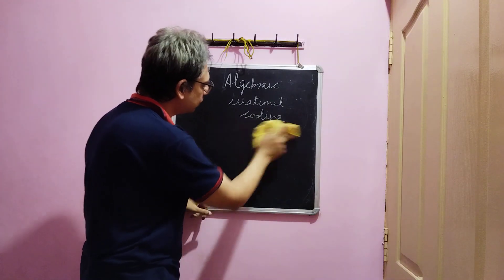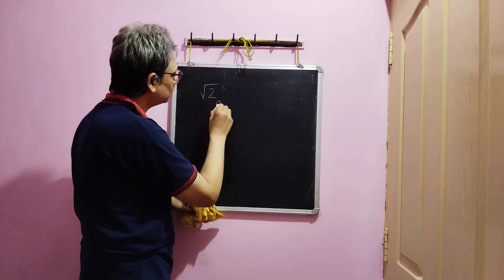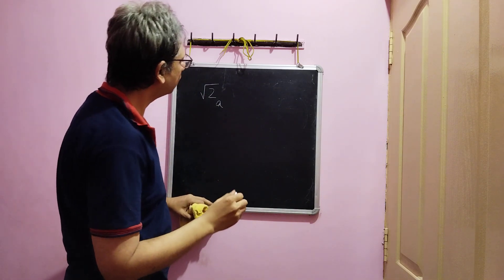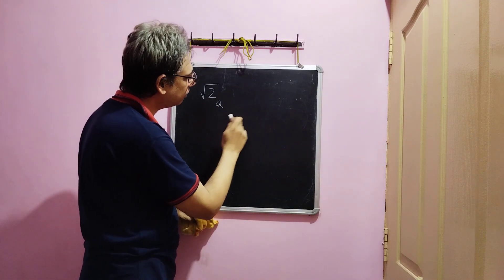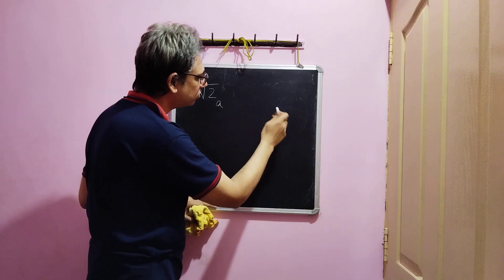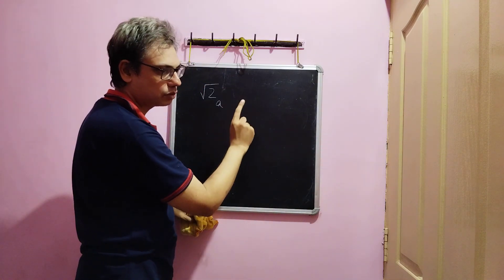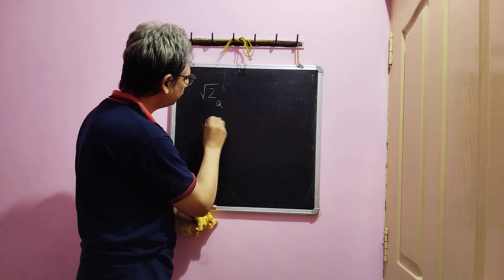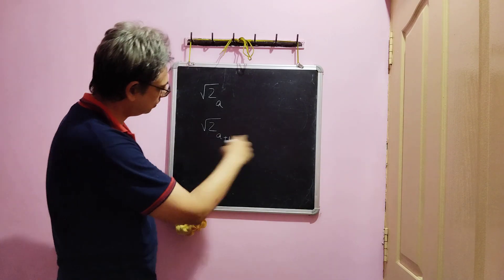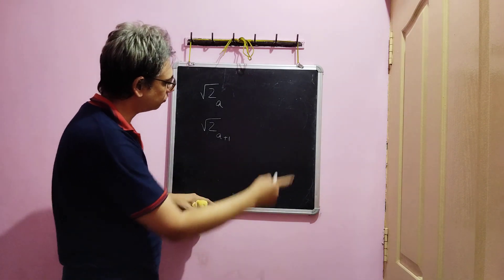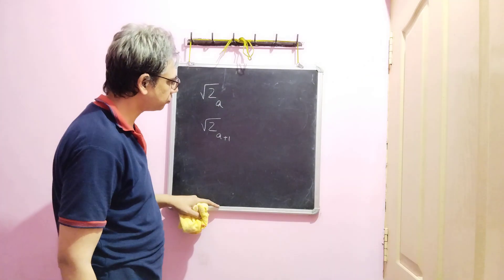If we simply adopt the convention root 2 subscript a to mean the binary expansion or representation of root 2 which has exactly a 1's in it followed by all 0's after that. Similarly, root 2 subscript a plus 1 means the binary expansion or representation with a plus 1 ones in it.